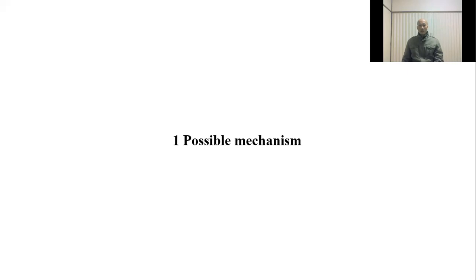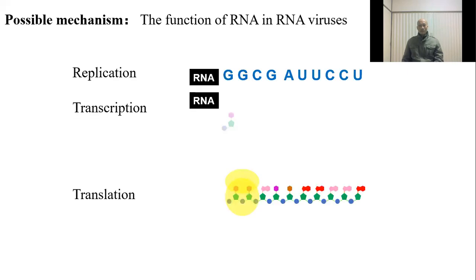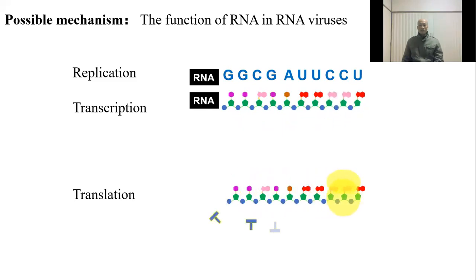Possible Mechanism. The RNA in RNA virus plays an important role in replication, transcription, and translation. The virus protein seems to only protect viral RNA and help them enter the cell.